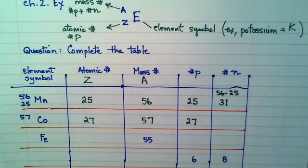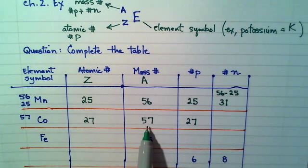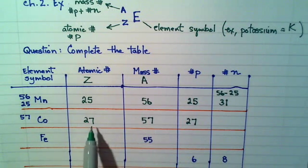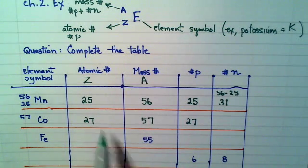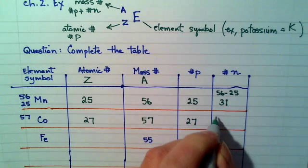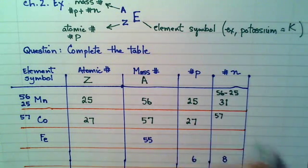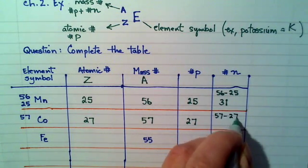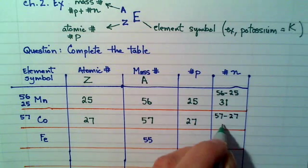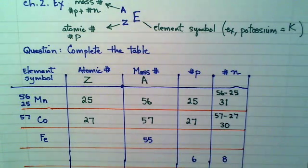And the number of neutrons, well, if the mass number is the number of neutrons plus protons, but I know there's 27 protons, I'll take the difference, and that's simply 57 minus 27, or just 30. How many electrons are there, by the way, on a neutral cobalt atom? 27. Right? The same as the number of protons.